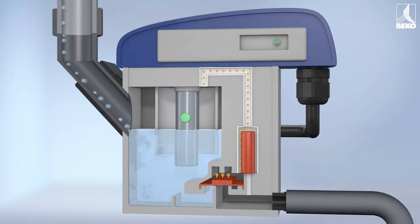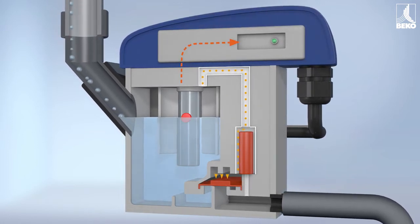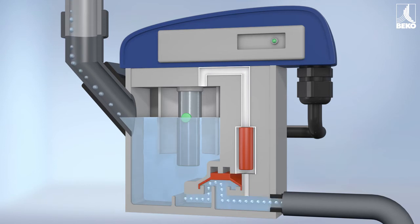A capacitive sensor constantly monitors the condensate. When the condensate reaches a preset level, the control unit immediately initiates the draining of the condensate.